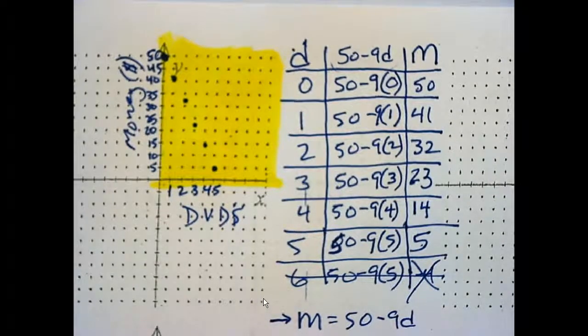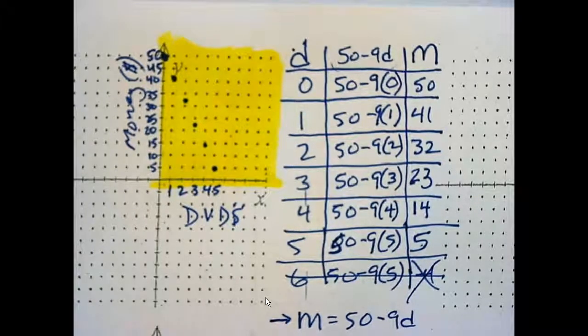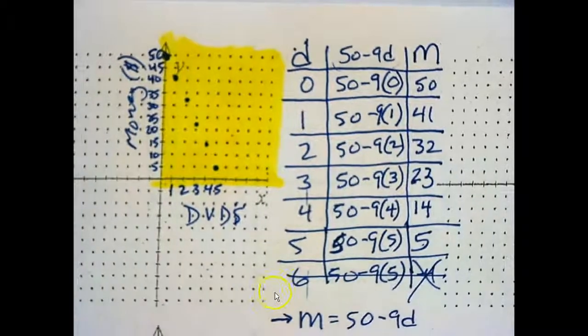This is linear. It is discrete, so that means, do we connect it? Nope. Nope. Doesn't make sense to connect it.